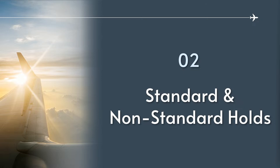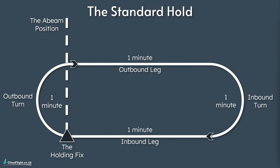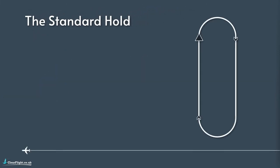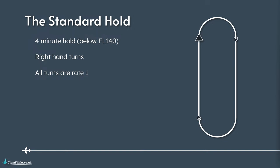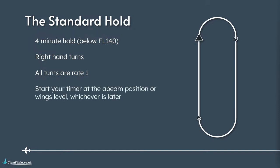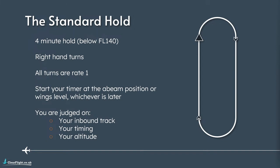That's the structure of a standard hold, but not all holds are standard. In a standard hold we've got four legs, each one's one minute long, giving us a four-minute standard hold - and they're only four minutes if you fly below flight level 140. A standard hold always has right-hand turns, turns are always made at rate one, you start your timer at the abeam position or wings level whichever comes later, and you're judged on those three things while flying the hold.